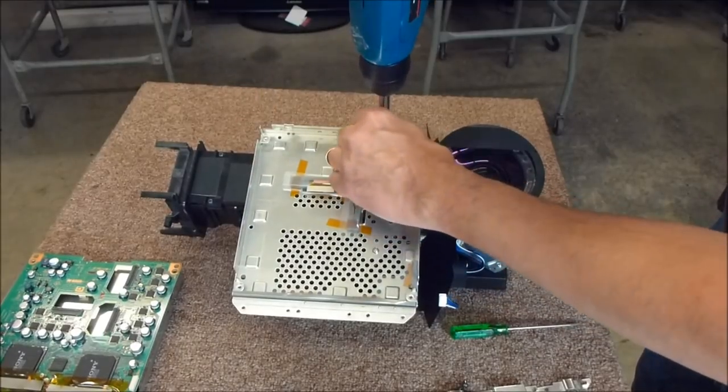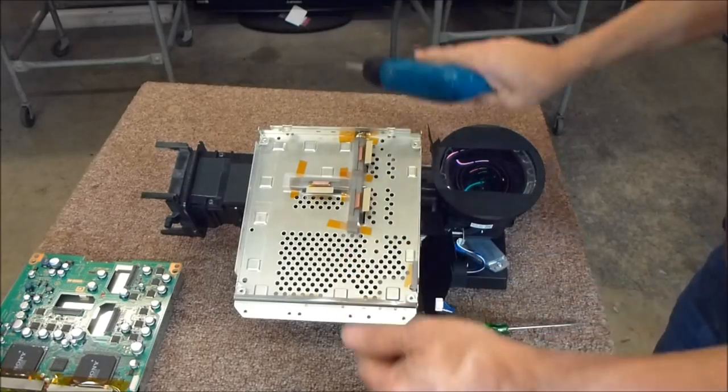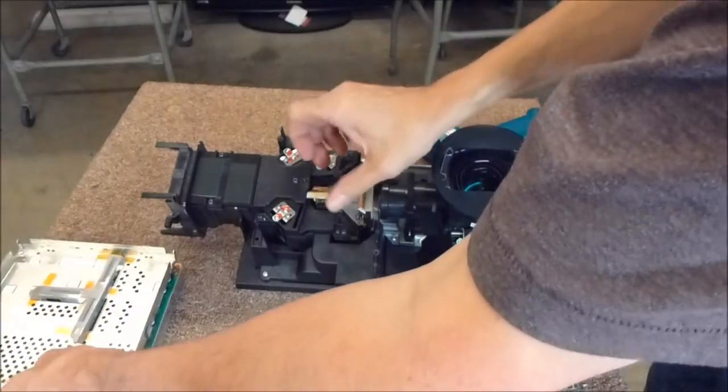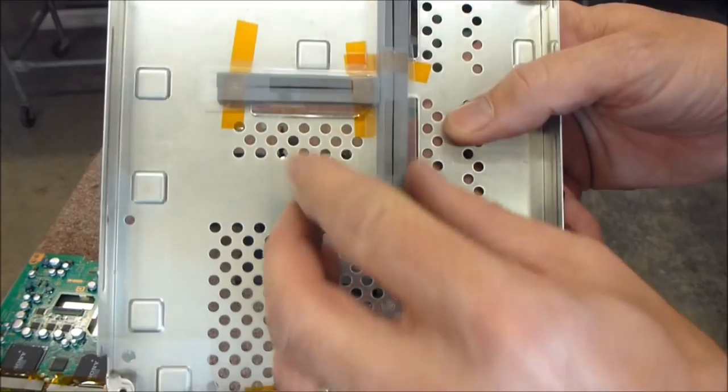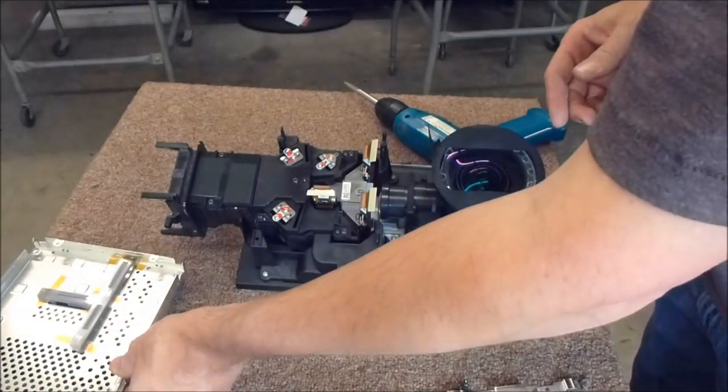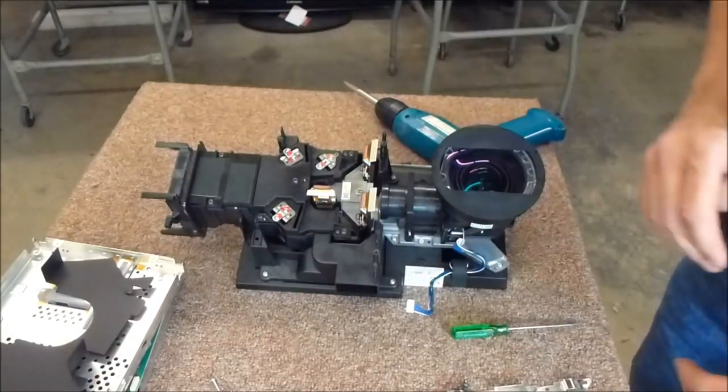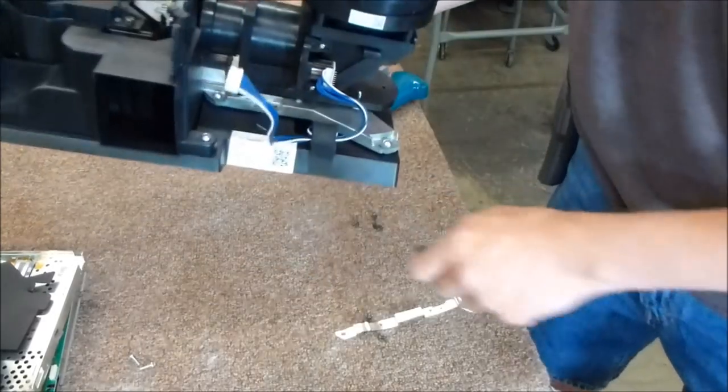There are three screws here that hold this metal shield in place. Lift it out. These cables come right out from in between these little gaskets, electrical gaskets. Once that's done, this little plastic shield can be moved.